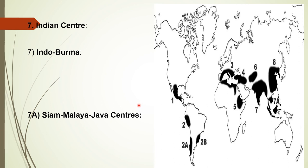The Indo-Malayan or Java center includes Indochina and the Malay Archipelago. It is the primary source of cereals, legumes, and fruits like banana, breadfruit, and mango. Oil, sugar, spice, and fiber plants include candle nut, cocoa, coconut palm, sugarcane, clove, nutmeg, and black pepper.